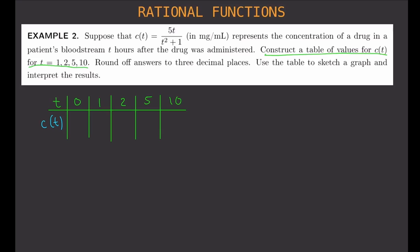I'm going to evaluate this function for all these times: 0, 1, 2, 5, and 10. So what is C of 0? C of 0 will be 5 times 0 over 0 squared plus 1, which is 0 over 1, and that is equal to 0. So C of 0 is 0.